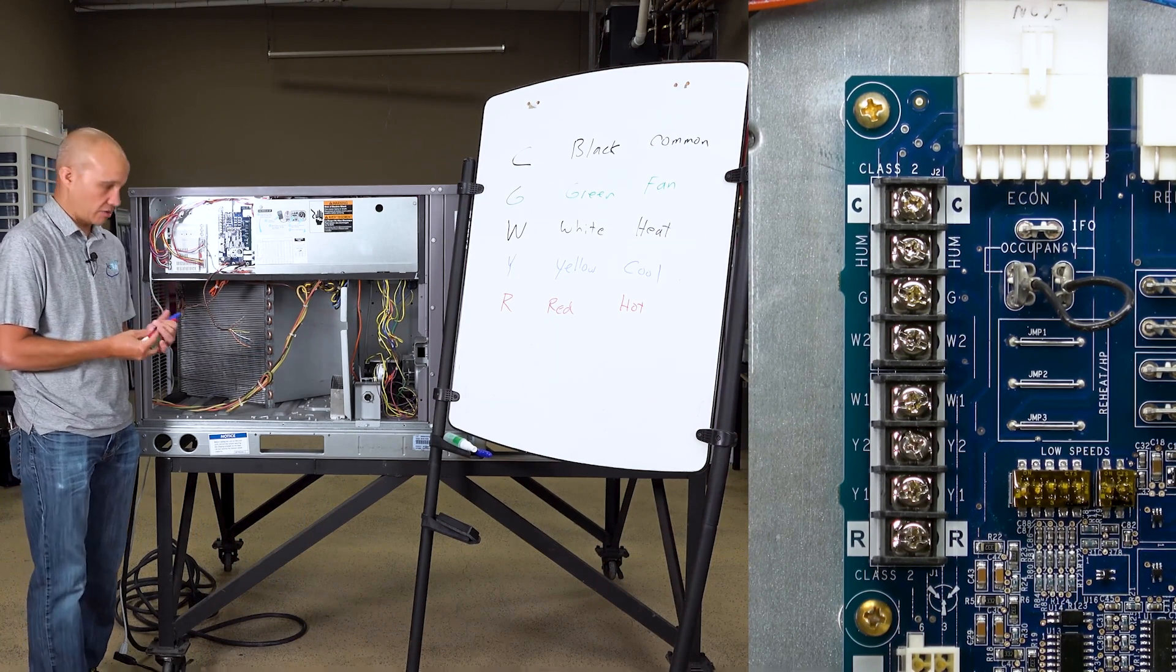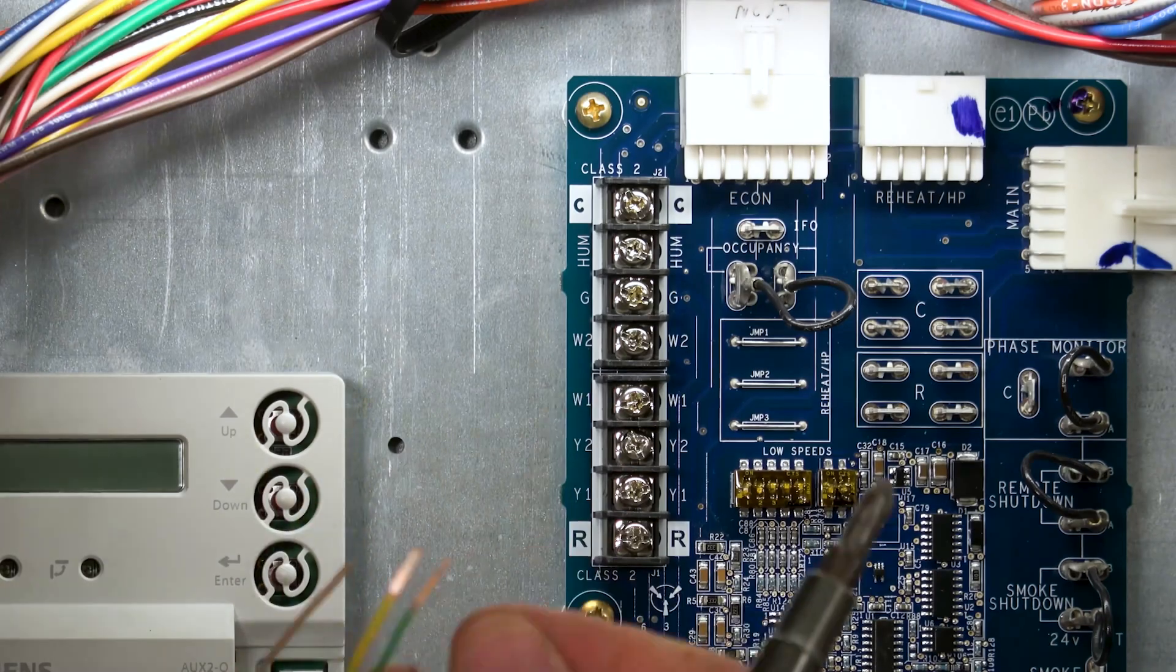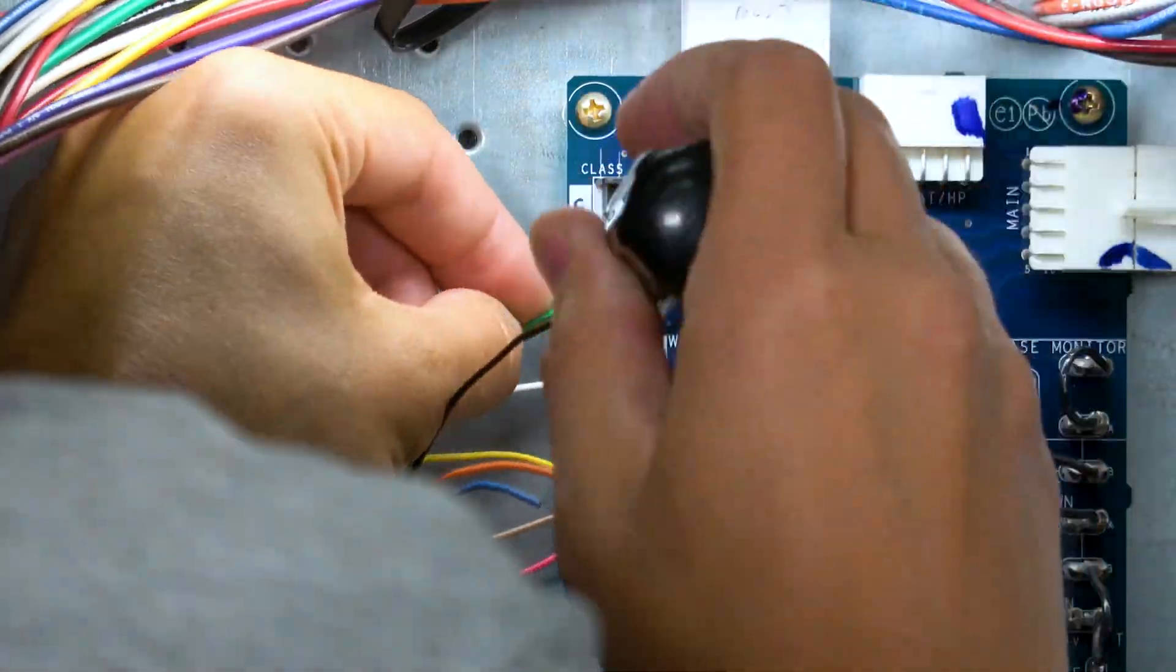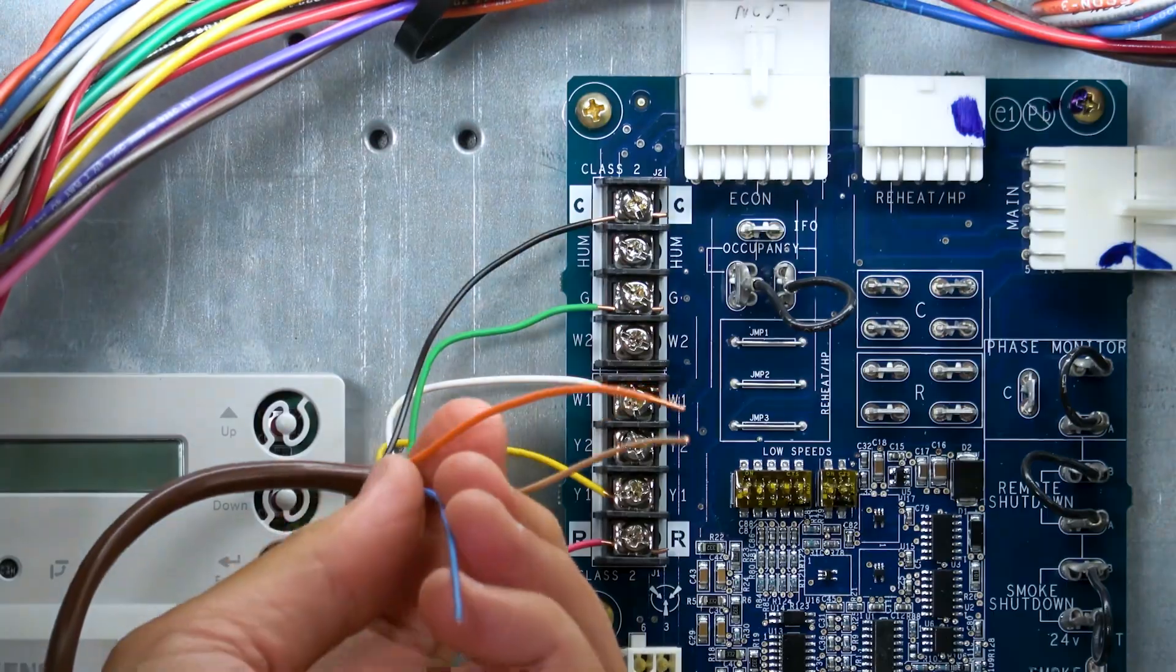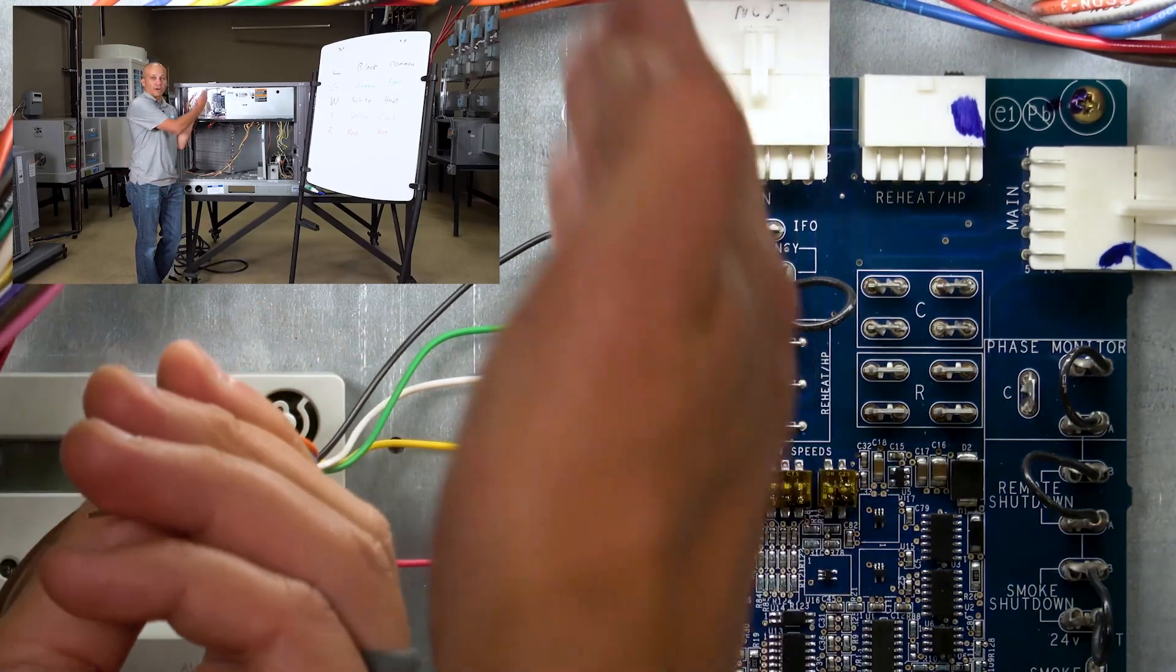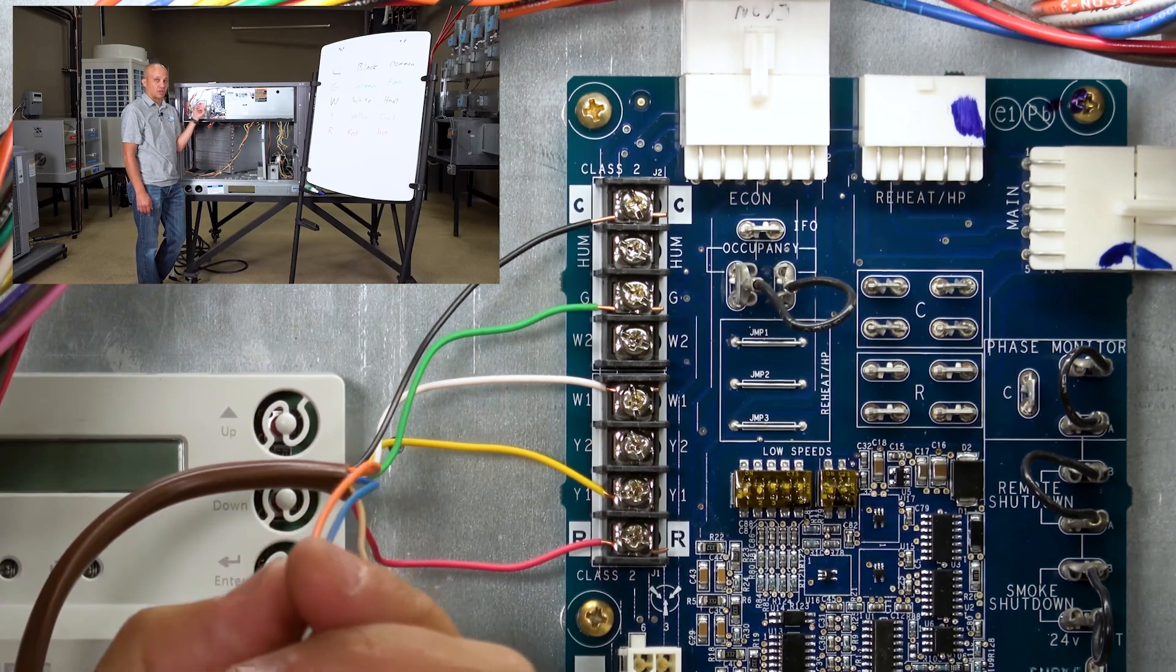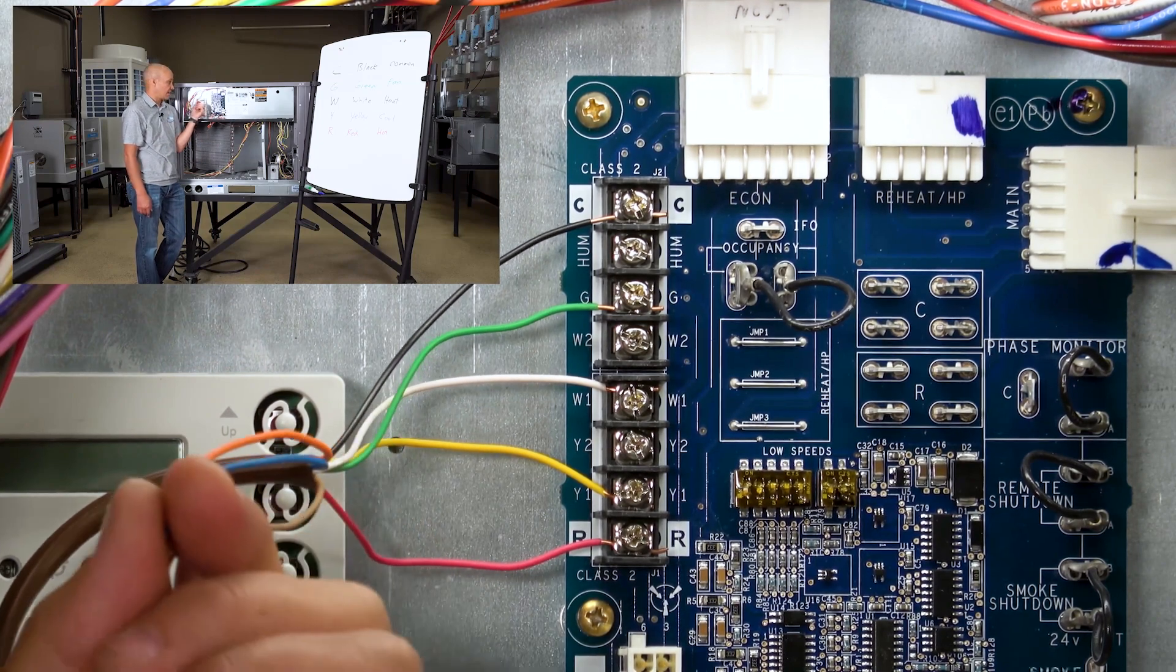So let's go ahead and do that real quick. We got our stuff all wired up here now, our five designated wires. If this was a two-stage heating or a two-stage cooling unit, then I would need to wire Y2 for cooling second stage and W2.